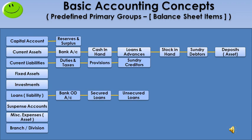Next, stock in hand — stock available in our godown. Next, sundry debtors — sometimes customers receive goods from us on credit and payment is not yet made. Such amounts are shown on the debit side of the balance sheet under the sundry debtor group. Next, deposits — such as security deposits paid by us. For example, if we run our office in a rented building, we deposit some amount to the landlord which will be returned when we leave the building.